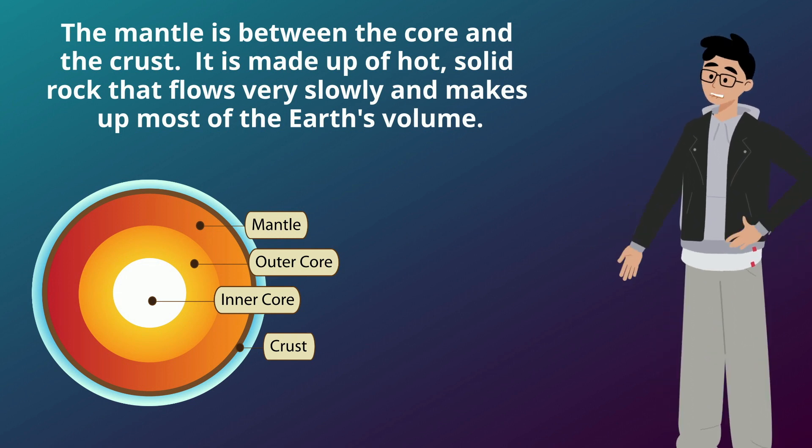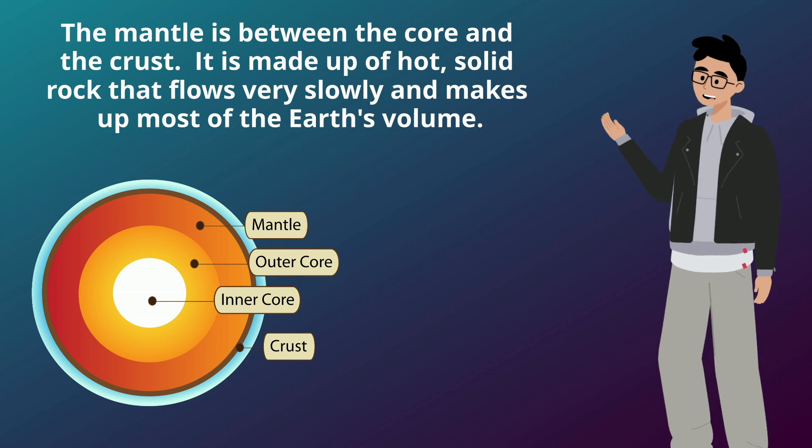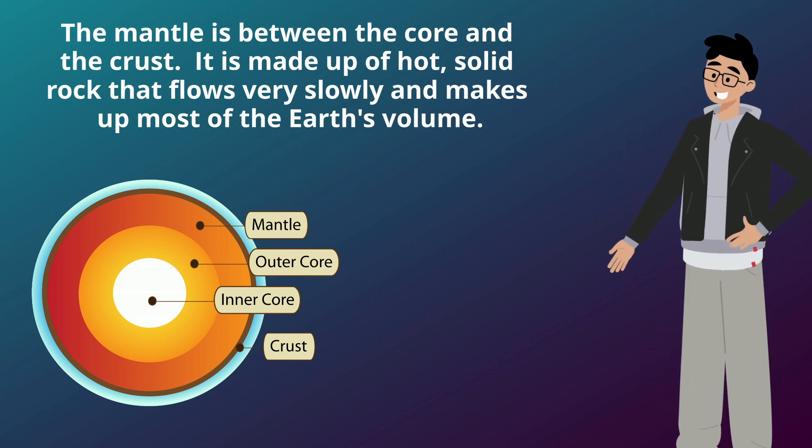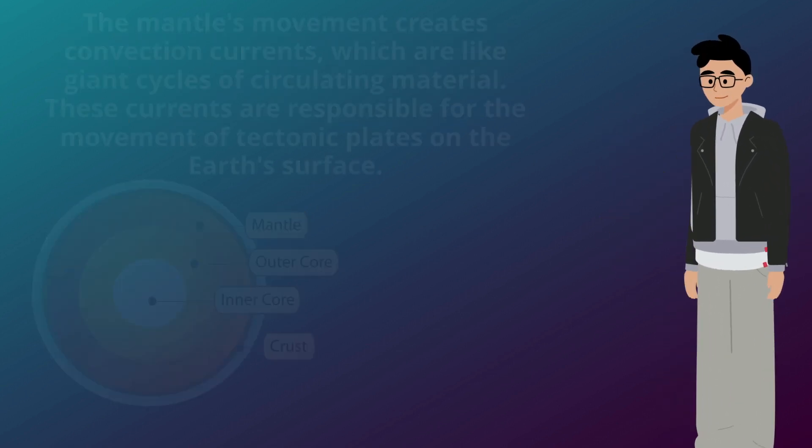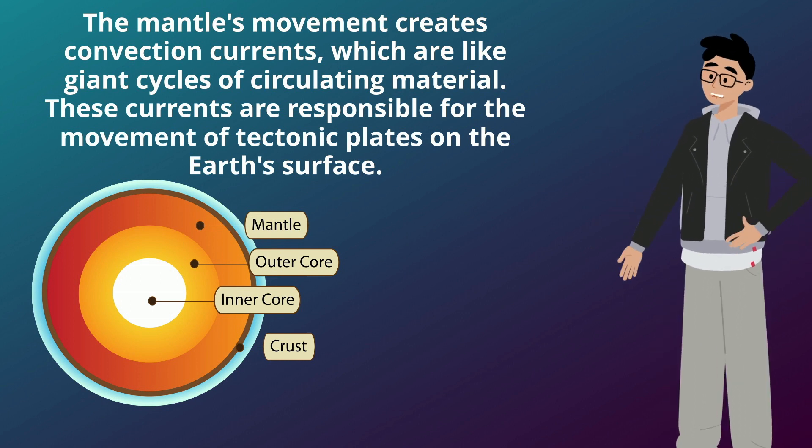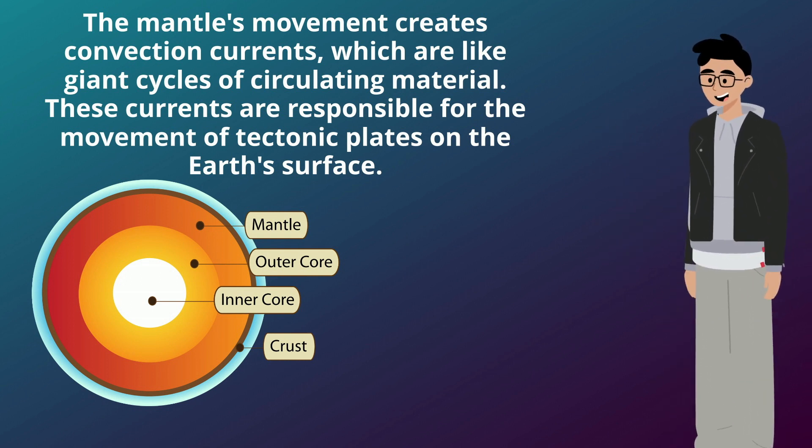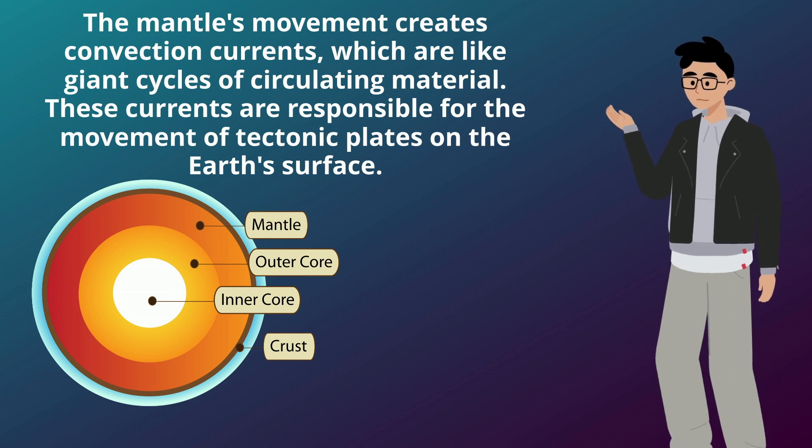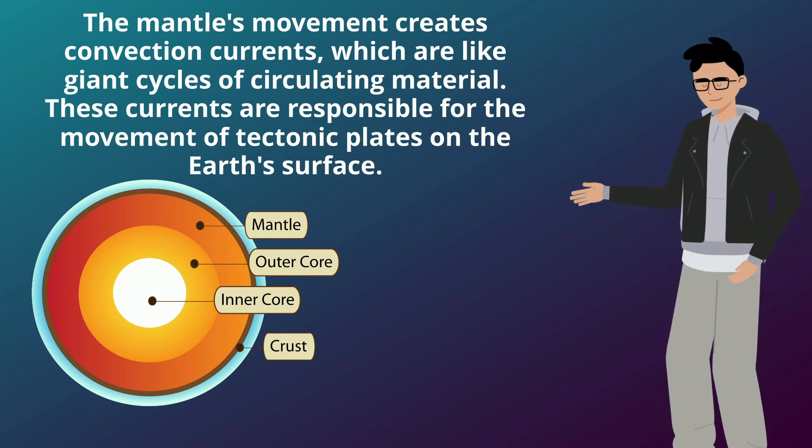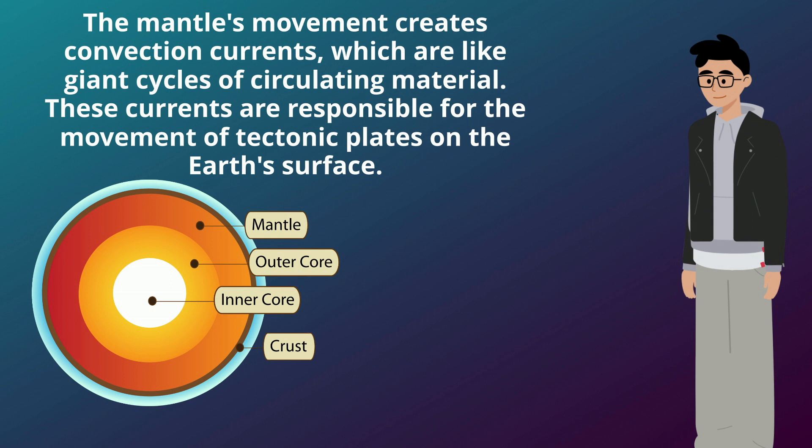The mantle is between the core and the crust. It is made up of hot, solid rock that flows very slowly and makes up most of the Earth's volume. The mantle's movement creates convection currents, which are like giant circles of circulating material. These currents are responsible for the movement of tectonic plates on the Earth's surface.